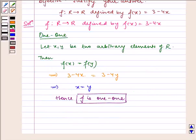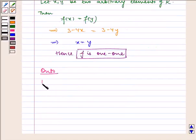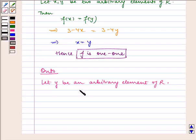Now let us check for onto. Let y be an arbitrary element of R. Then, f(x) = y, which implies 3 - 4x = y.